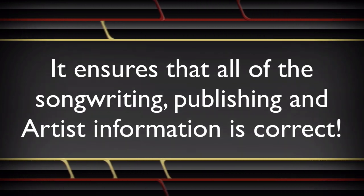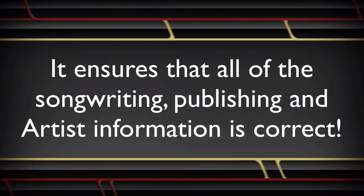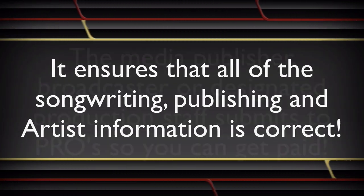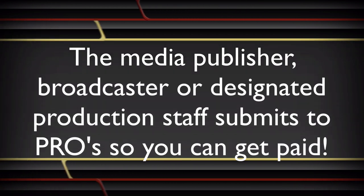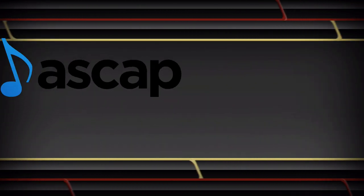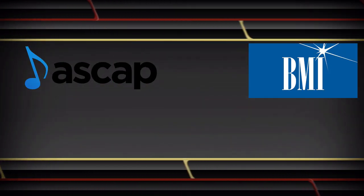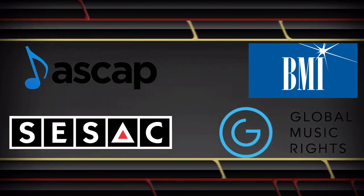Once the producers of the show or staff member or whoever is designated to fill out this information, once it's finished, they send the cue sheets to the performing rights organizations. This is the main or primary way that performing rights organizations track the use of the music that was used in the film or TV show or documentary.